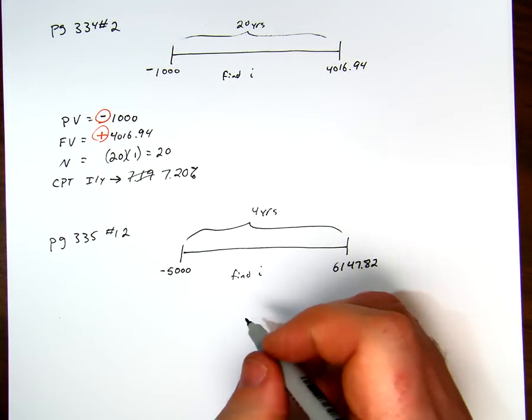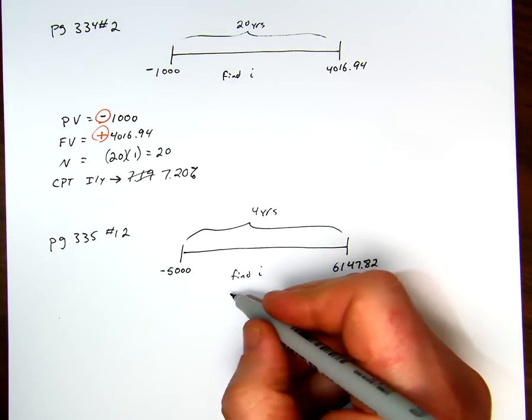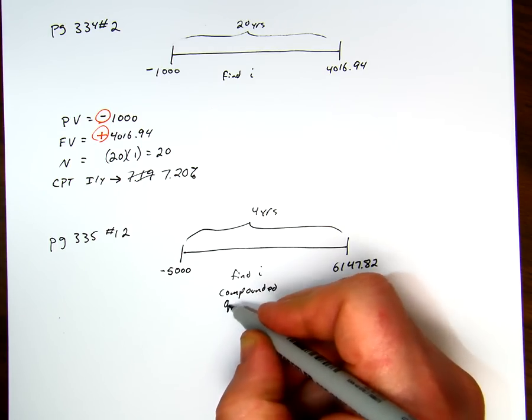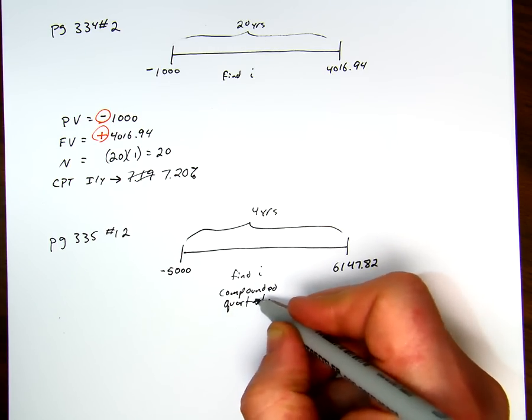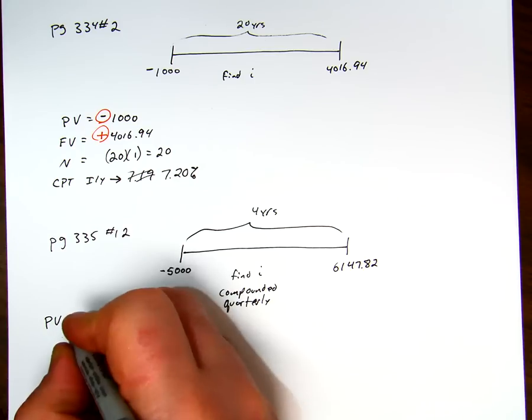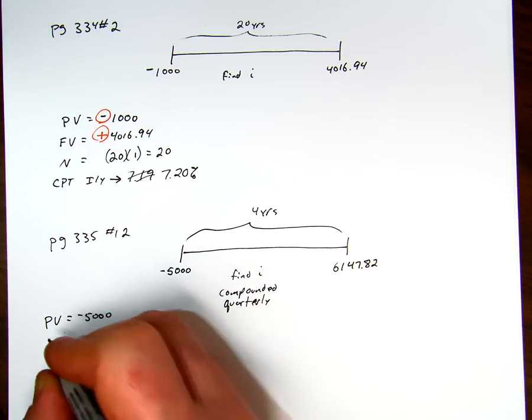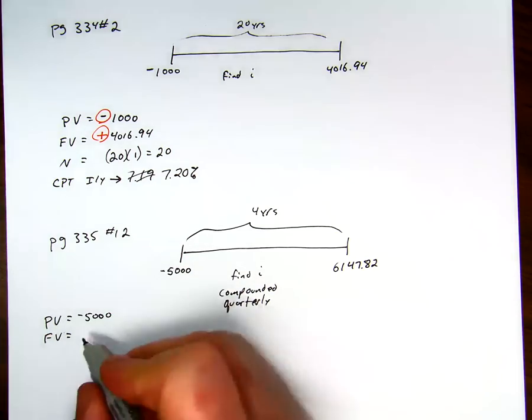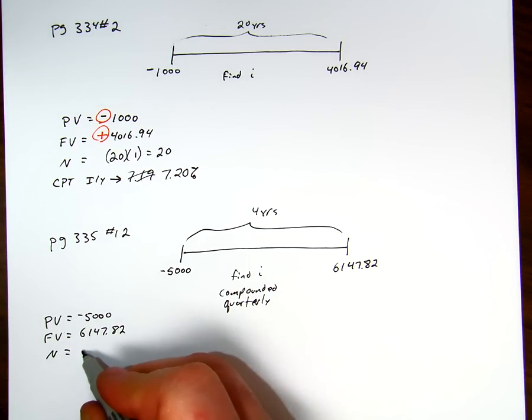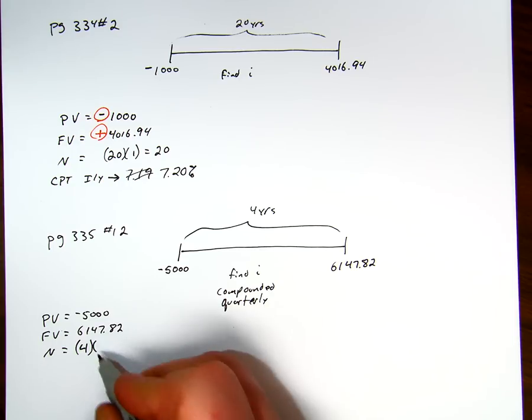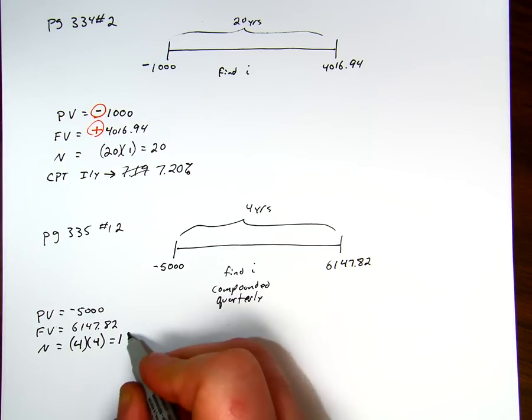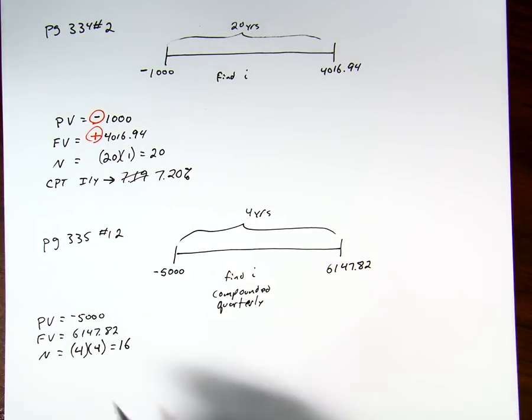A couple adjustments here is one i is compounded quarterly. So we're looking at compounded quarterly. Most of the stuff is the same. We're still going to have a present value negative $5,000. A future value of $6,147.82. And now this is going to be number of years, four times the compounding per year. So quarterly is four times per year. So that's going to be 16 periods.